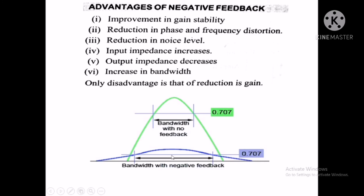The green curve shows the bandwidth with no feedback, and the blue curve shows the bandwidth with negative feedback. Using negative feedback gives an increased bandwidth. For good amplification we require large bandwidth, so in the amplifier we always use negative feedback, and for oscillation we use positive feedback. These are the applications of feedback in the amplifier.